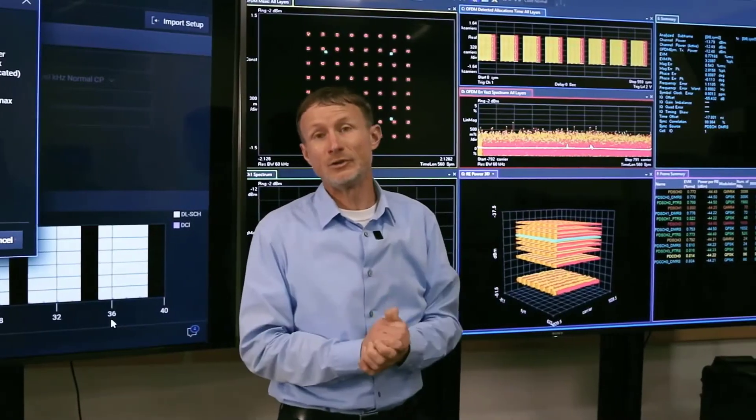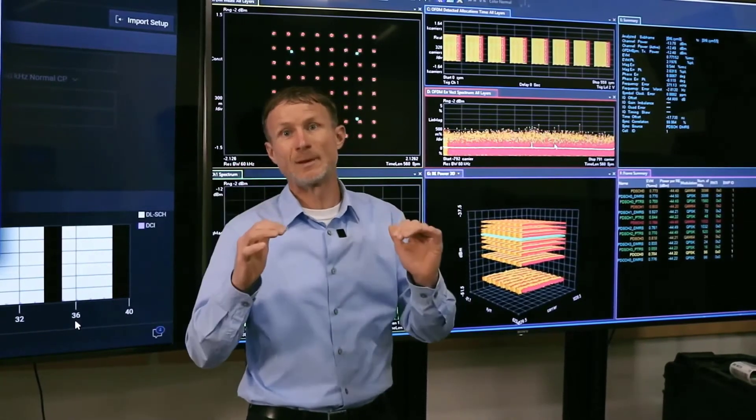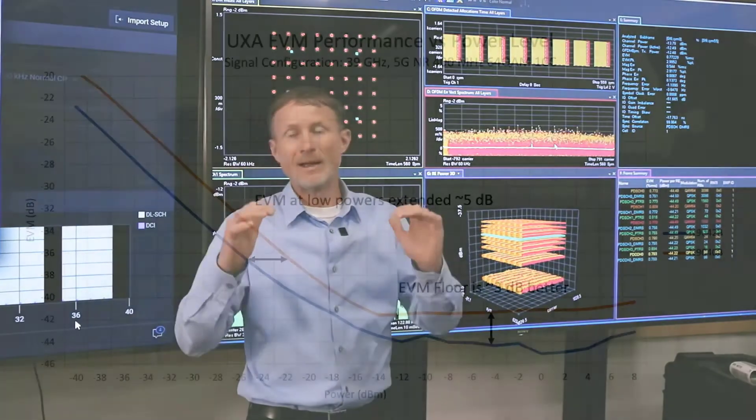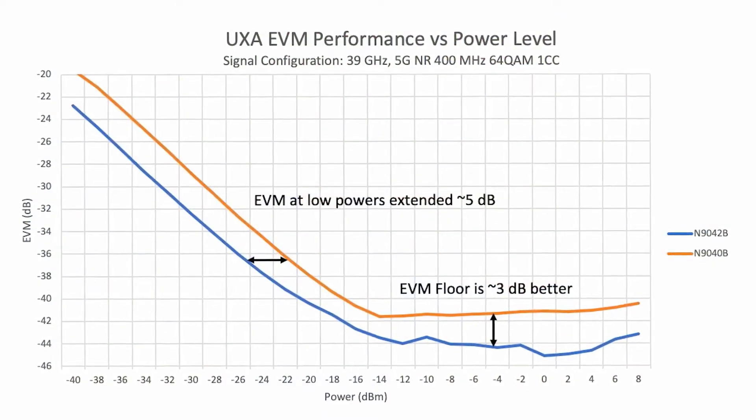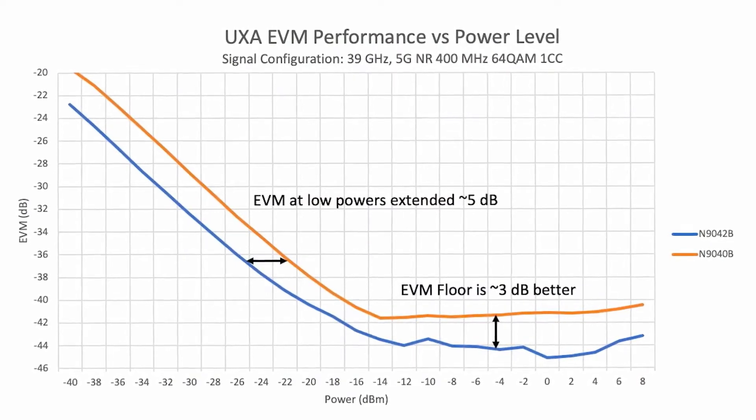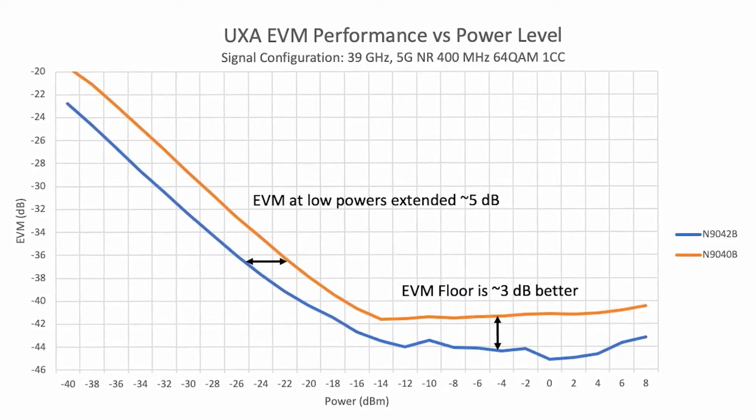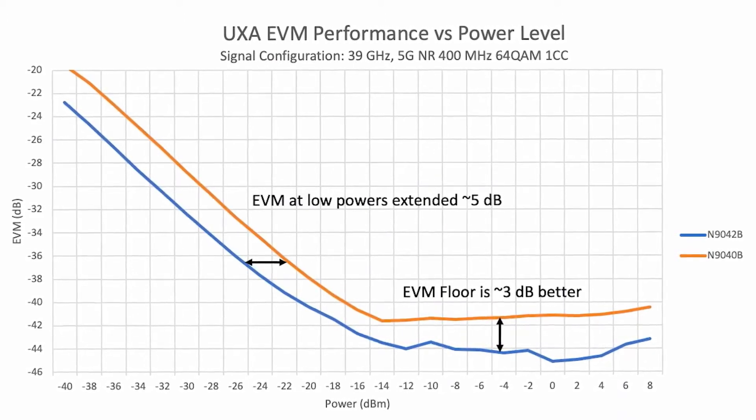On the screen, I'm going to compare the previous generation UXA with the newest member of the UXA family. And what you can see is that the EVM floor has dropped a couple of dB, and we've also extended the range with which you can make those really good EVM measurements. So now you're able to make really good EVM measurements, even at the lowest power levels.